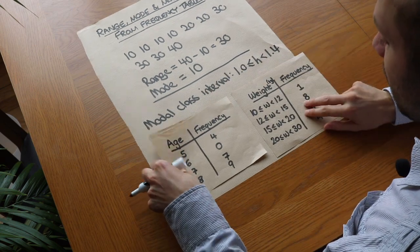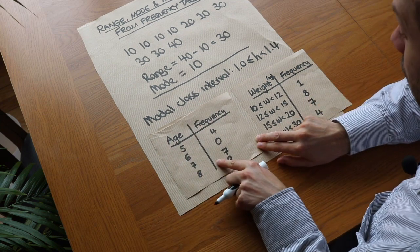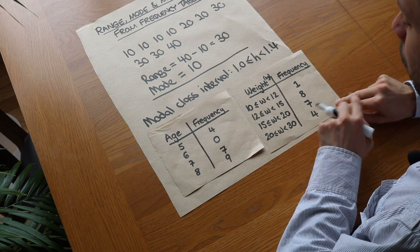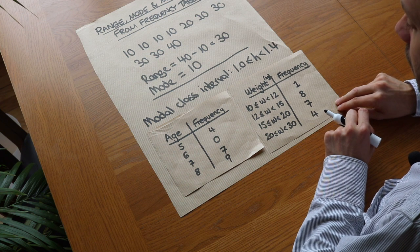Now, why don't you have a go at these? I want you, for this table, I want you to find the mode and the range, and for this grouped frequency table, I want you to just find the modal class interval. You may want to pause the video at this point to have a go at those.